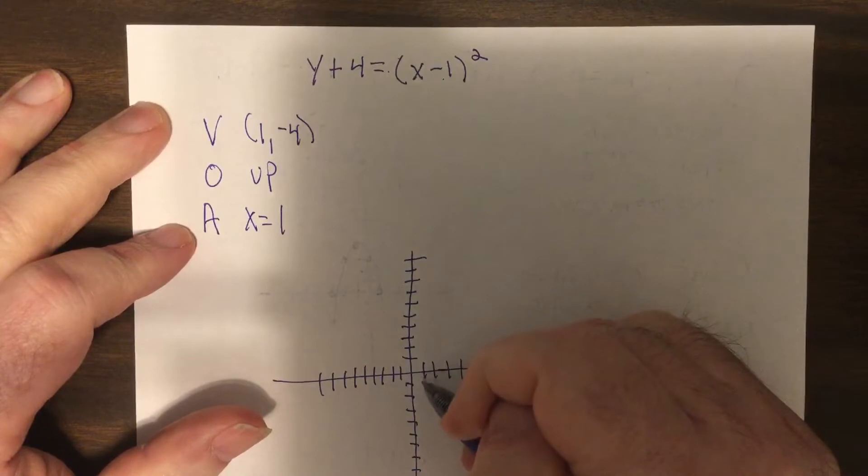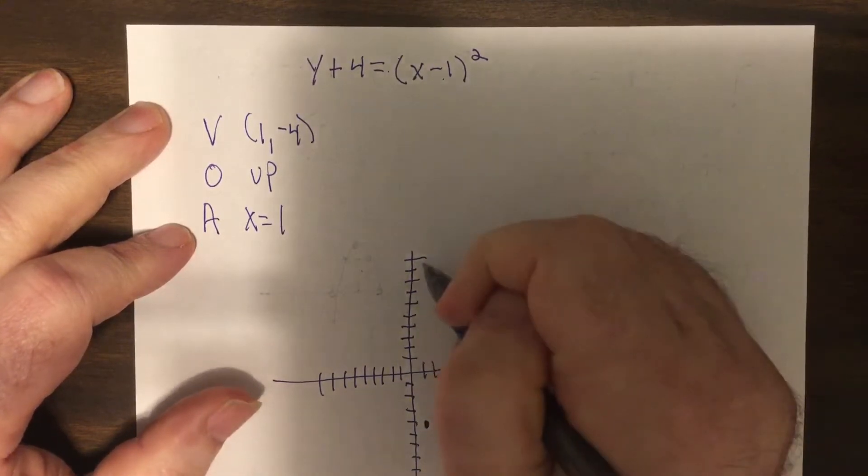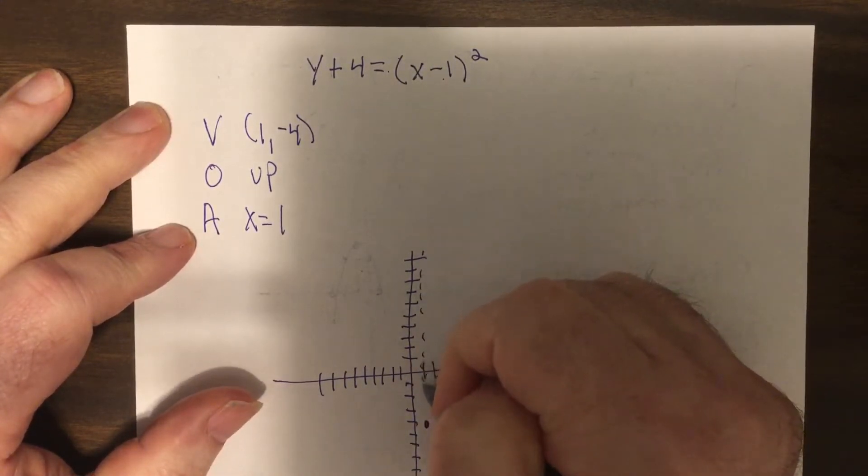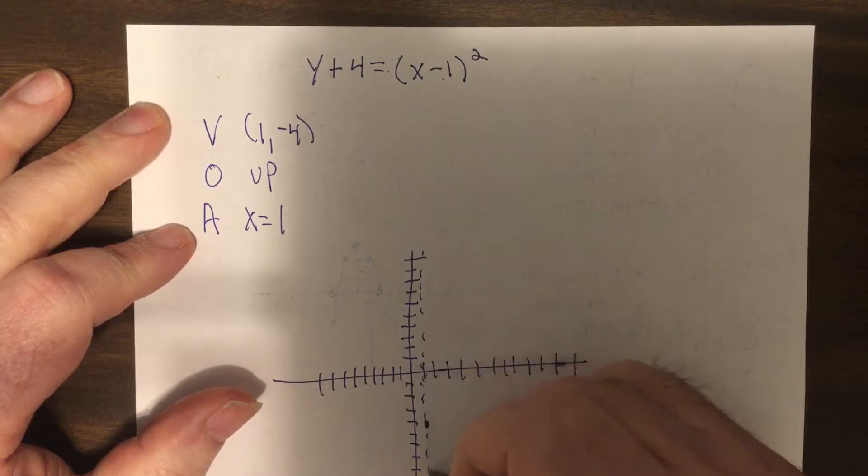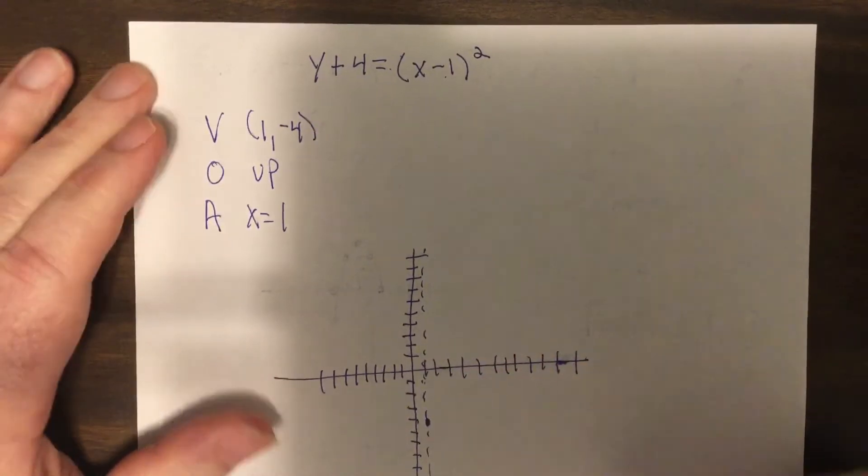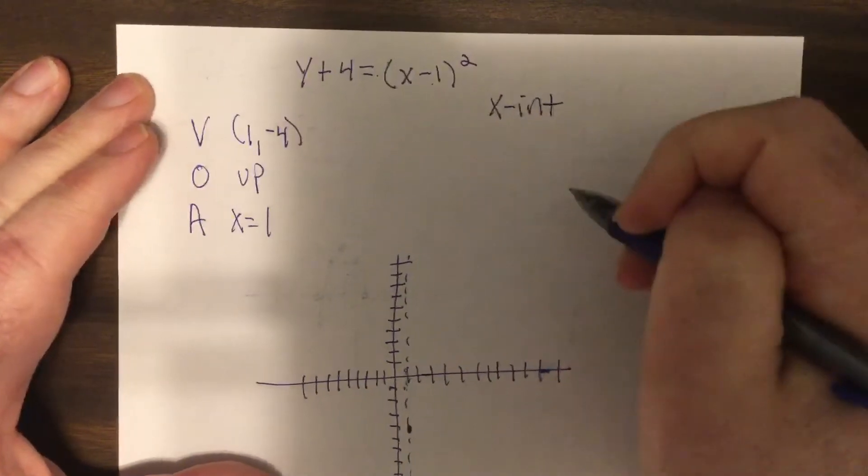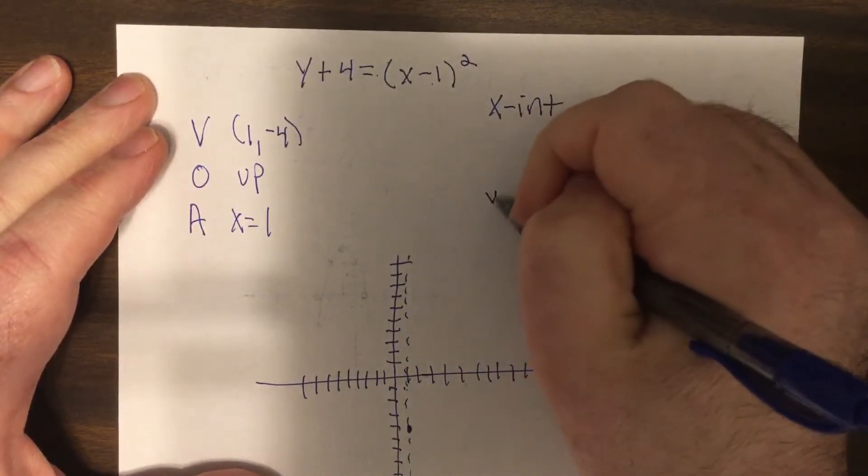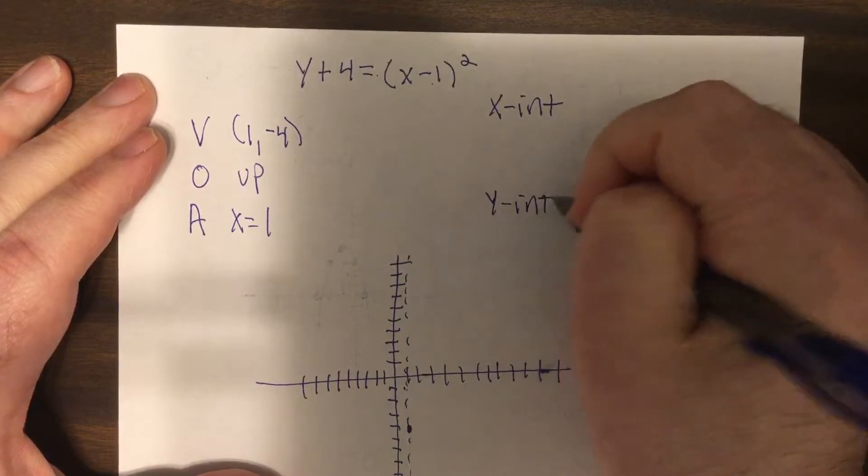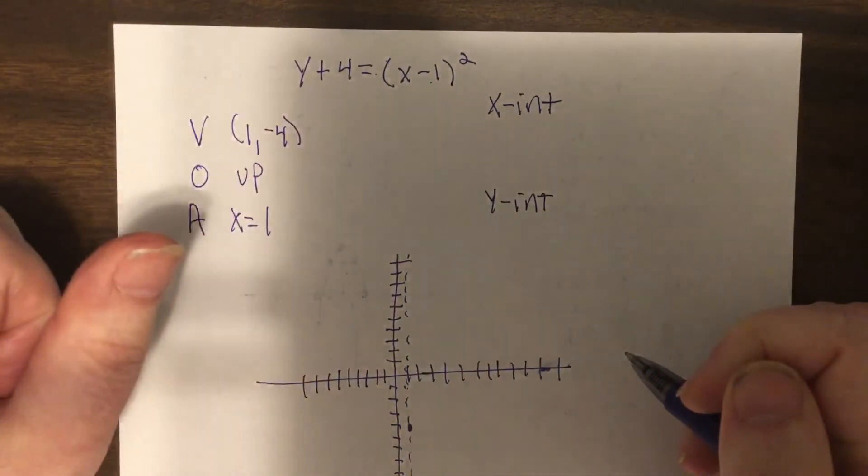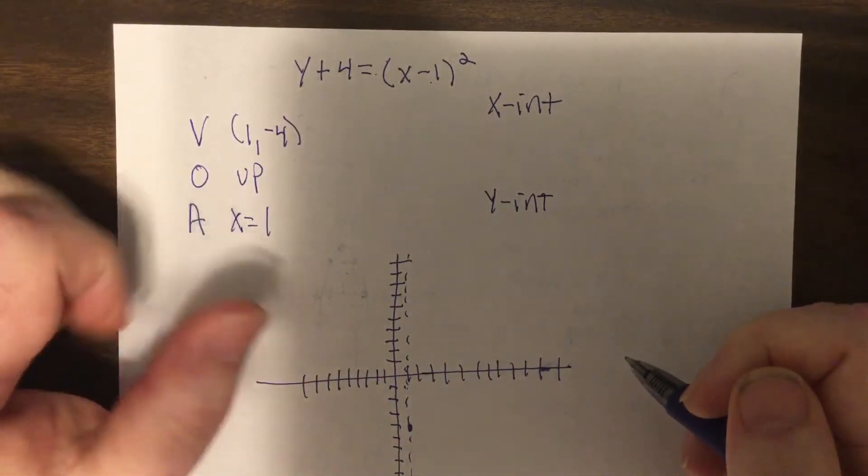So I don't know why I like to graph this. Well, this should be straight, but a little crooked. So then we do the X intercept and the Y intercept. Now hopefully this gives us enough information, but it doesn't. We keep going.